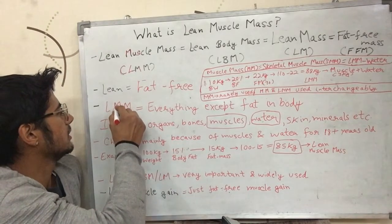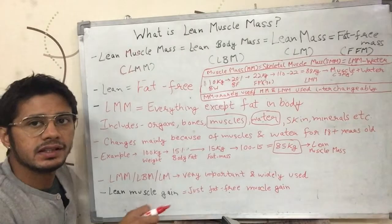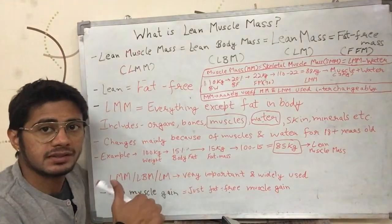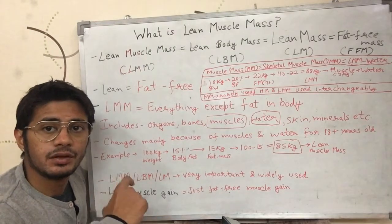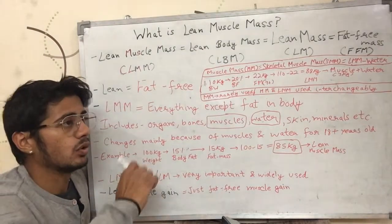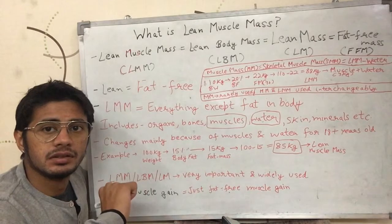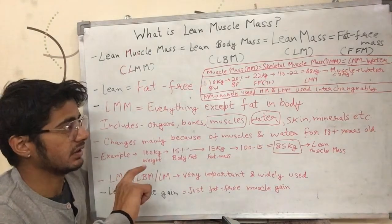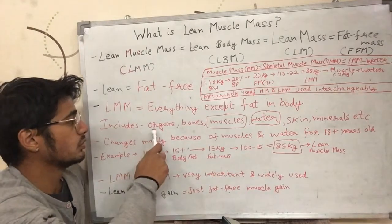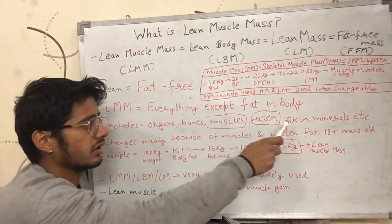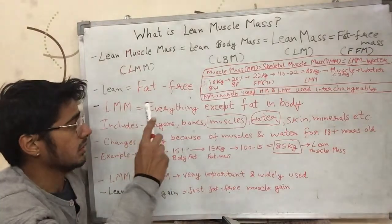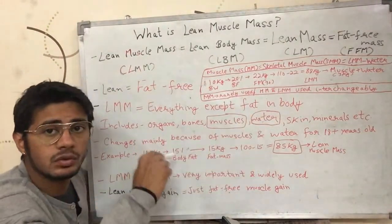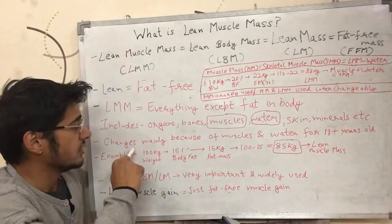Lean muscle mass is everything in your body except fat mass. Fat mass is the weight of fat in your body, so everything except the weight of fat is called lean muscle mass. That includes the weight of your organs, bones, muscles, water, skin, and minerals.